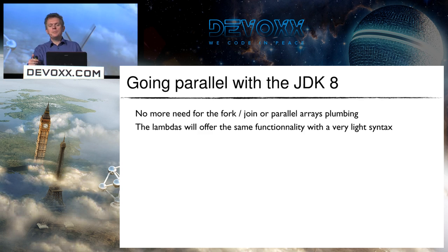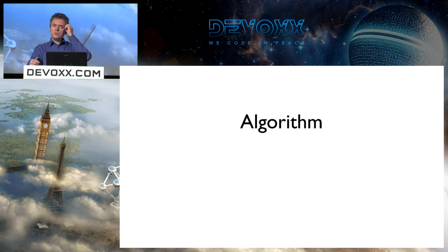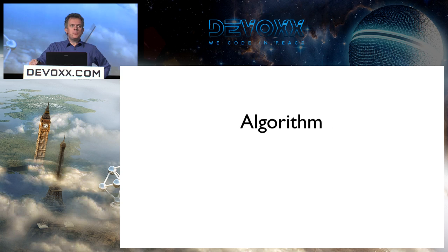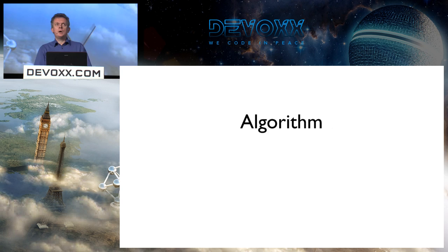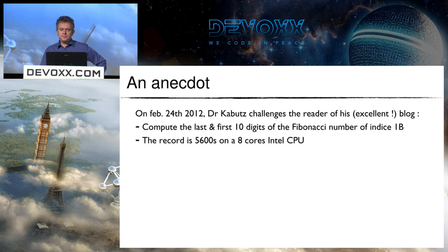The conclusion on lambdas: they offer the same functionality as Fork/Join and parallel arrays but with very light syntax. There is probably a Fork/Join or parallel arrays mechanism under the hood, but you don't see it — which is good because that code is technical to write. Now let's talk about algorithms, because we've discussed CPUs, language, and APIs — let's consider whether the algorithm itself is the right one.